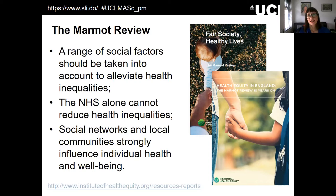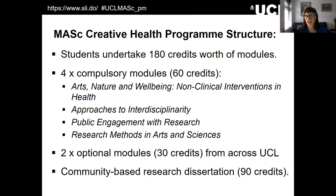I want to spend a few minutes just outlining the programme structure, then give you a little bit of background on the admissions process. Please do ask questions if there are any specific topics you want us to cover in more detail. Our programme, like many taught masters programmes, is worth 180 credits worth of modules. That combines taught modules and research modules. There'll be four compulsory modules that all students will undertake, worth 15 credits each.